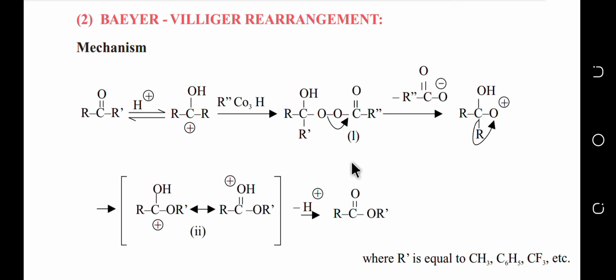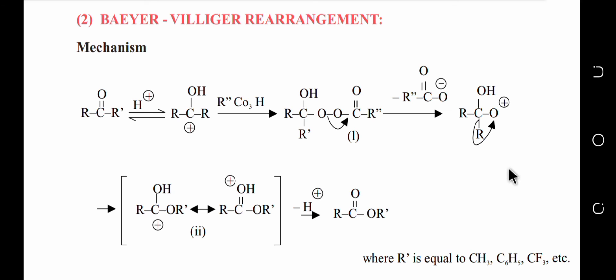These are all the alkyl groups you can use in this mechanism. The Baeyer-Villiger rearrangement is a very important mechanism. I hope it is clear now. If you have any questions, you can ask in the comment section or contact me via WhatsApp — the link is in the description box. Thank you very much, and please subscribe!